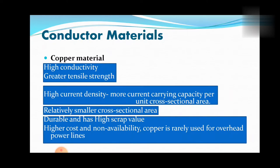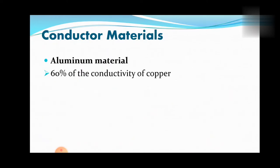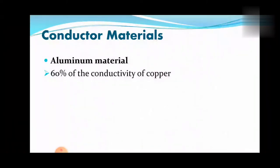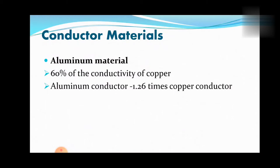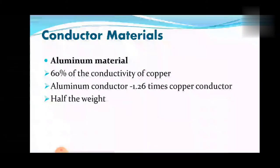Regarding the aluminum material, aluminum has about 60% of the conductivity of copper. That means, for the same resistance, the diameter of an aluminum conductor is about 1.26 times that of a copper conductor. However, an aluminum conductor has almost half of the weight of an equivalent copper conductor.